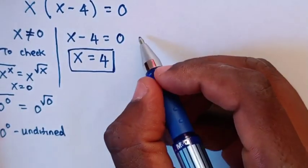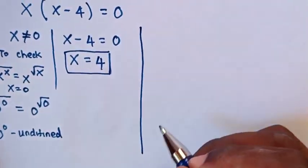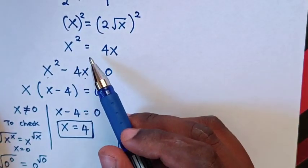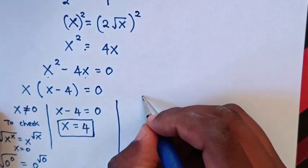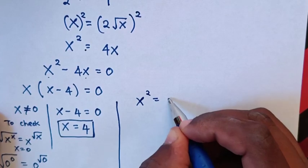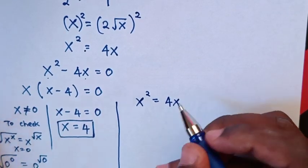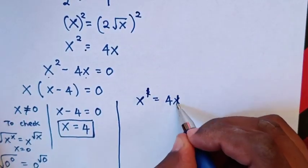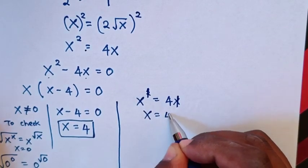Or we can solve it another way: from x squared is equal to 4x, we can divide both sides by x, so the x squared cancels with x, giving x is equal to 4 directly.